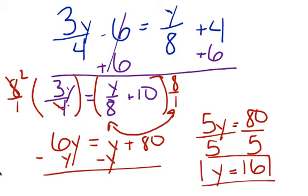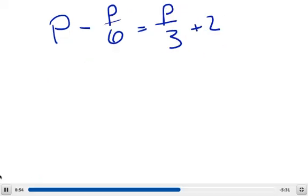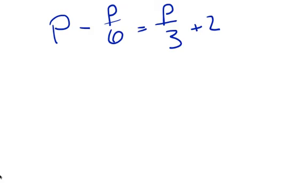I know some of these might seem like they're going pretty fast, but follow along, write them down, try to go through the steps with me. In class we'll go over it more. So in this one we have p minus p divided by 6 equals p divided by 3 plus 2. There's nothing to move around, but you need to ask yourself: what are my common denominators? I have a denominator of 6 and a denominator of 3, so the common denominator of those two would be 6.